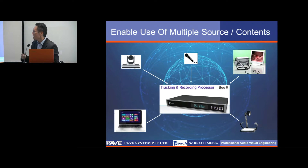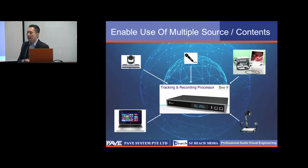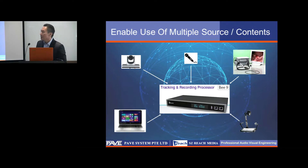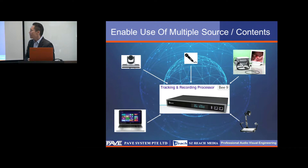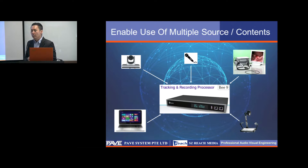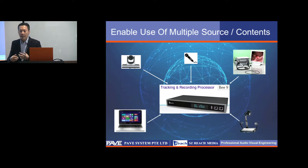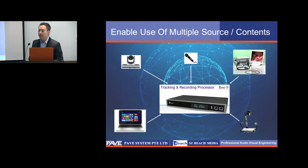This is where I want to introduce you to the Rich System, specifically a series called the B9. It's a recording system that has the ability to connect with Pan-Tilt cameras, so that when the presenter is moving from place to place, the camera will automatically track the location of the person.